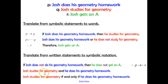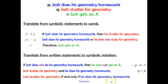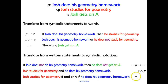The second statement: 'Josh studies for geometry' — our Q — and 'he does his geometry homework' — our P — gives us Q ∧ P. Lastly, 'Josh studies for geometry if and only if he does his geometry homework' uses the double-sided arrow: Q ↔ P.